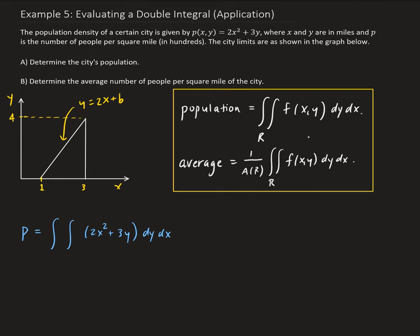We can use the point at (1, 0) to find B. When x is 1, y is 0, so we have 0 = 2(1) + B, therefore B = −2. So this line is y = 2x − 2, and that describes this boundary line.